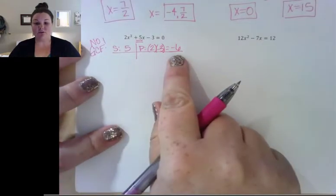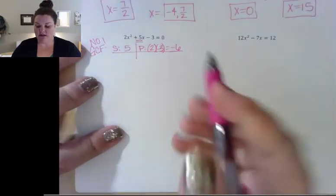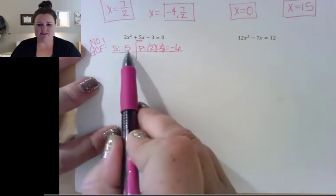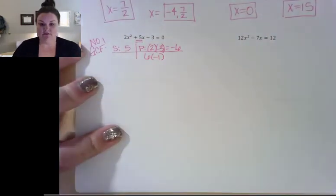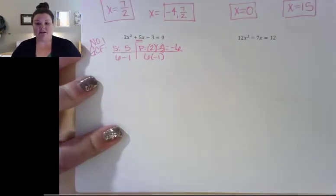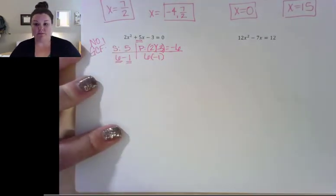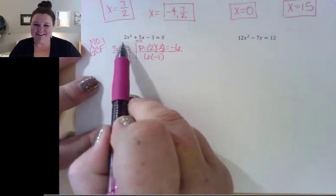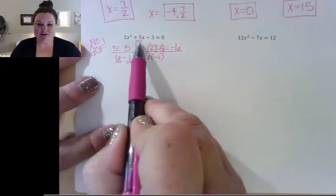So 2 times negative 3 gives me a negative 6. That means I need two numbers that multiply to negative 6 that combine to 5. I can't use 2 and 3, because if I need it to be negative, one of them would have to be negative, and that would cause it not to combine to 5. So I'm going to use 6 and negative 1 — 6 times negative 1 gives me negative 6, and 6 minus 1 gives me the 5 that I need. I'll take these two to replace my middle term. Since my leading coefficient is not 1, I can't use the shortcut.